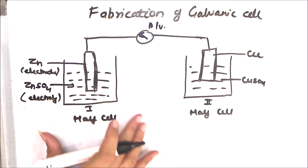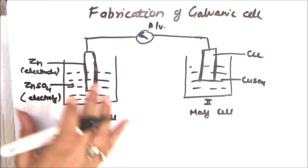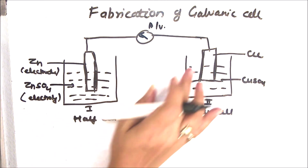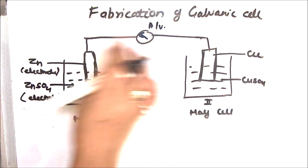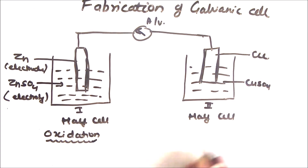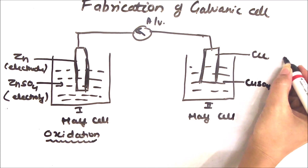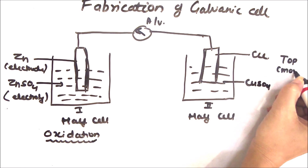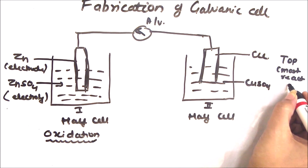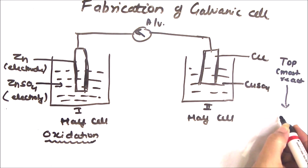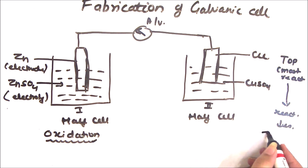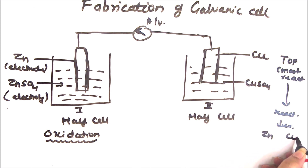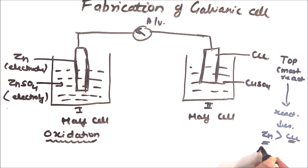In a galvanic cell, in the first beaker the zinc electrode is dipped in the solution of its own electrolyte, zinc sulfate, and in the second beaker the copper electrode is dipped in its own ion solution, copper sulfate. According to the activity series, elements at the top are most reactive metals, and as you move down the activity series, reactivity decreases. So zinc is above copper in the activity series, meaning zinc is a more reactive metal compared to copper.